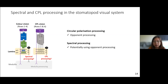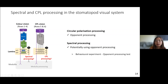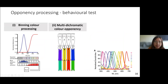A brief conclusion from the electrophysiology: circular polarization uses opponent processing, same as spectral processing. However, because there are not many replications for the spectral processing data, I moved on to behavioral experiments specifically to examine opponent processing of color. The behavioral experiments are designed to test the possibility of multi-dichromatic color opponency by narrowing down the activation of photoreceptors.